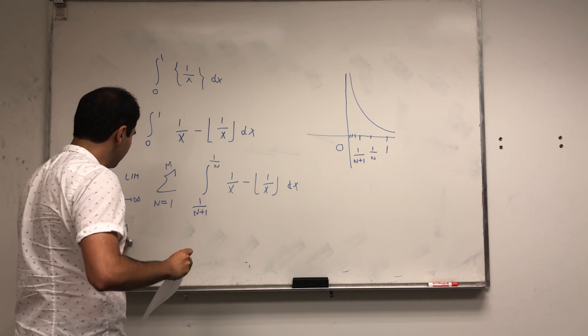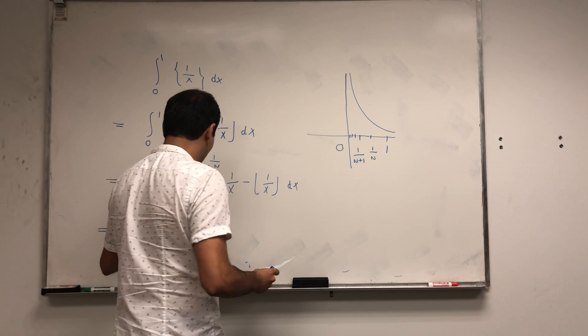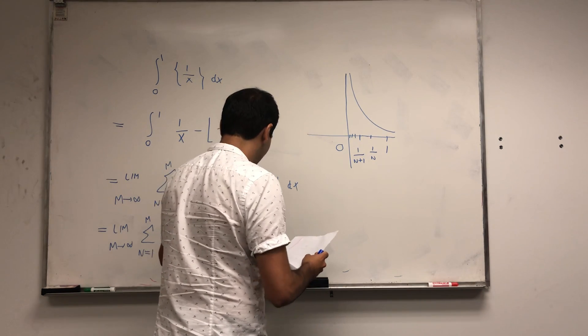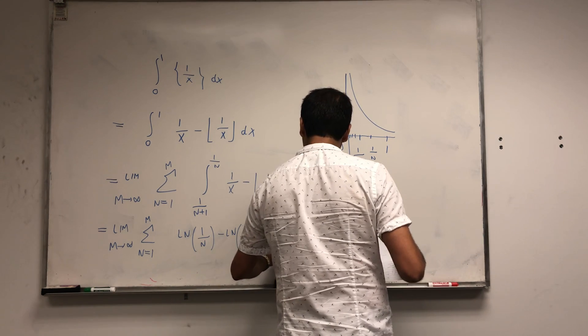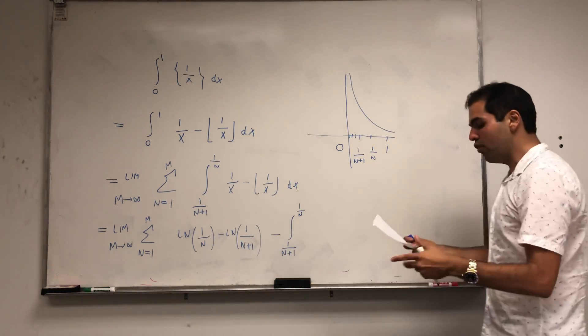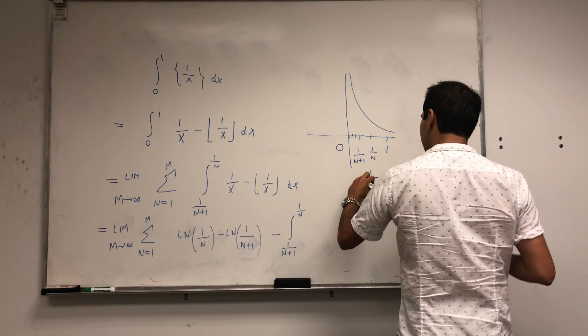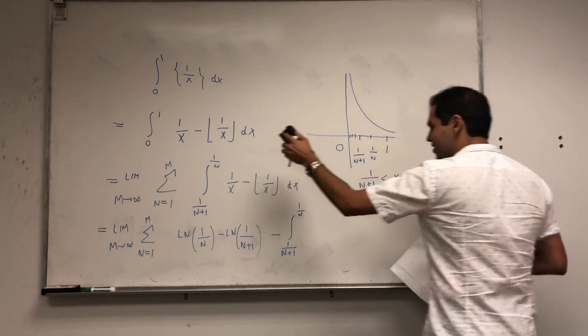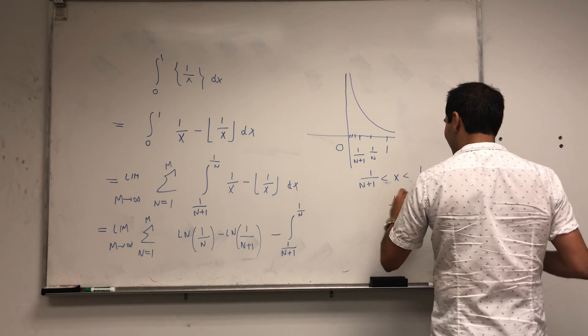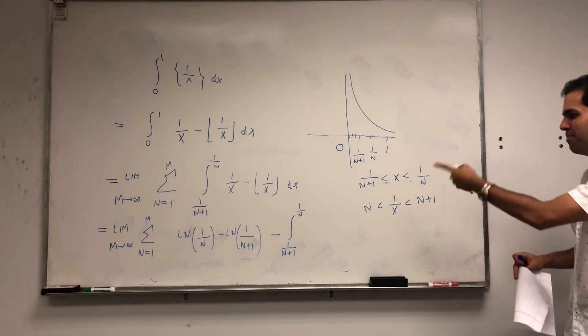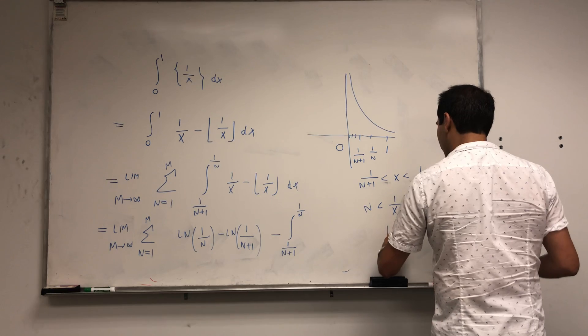So this is limit m goes to infinity of sum from n equals 1 to m. Now evaluate the ln. So it is ln of 1 over n minus ln of 1 over n plus 1 minus integral from 1 over n plus 1 to 1 over n of the integer part of 1 over x. But now, notice the following. We know that x is between 1 over n plus 1 and 1 over n. Then 1 over x is between n and n plus 1.